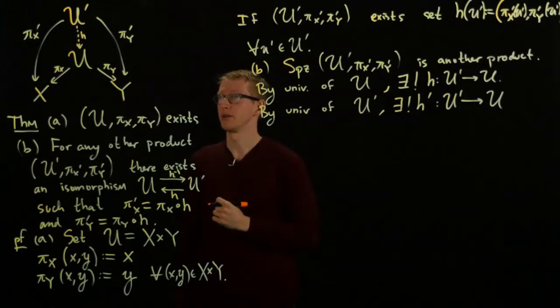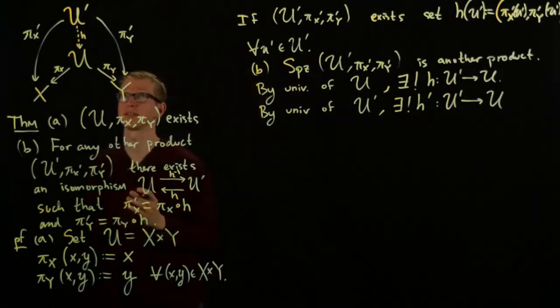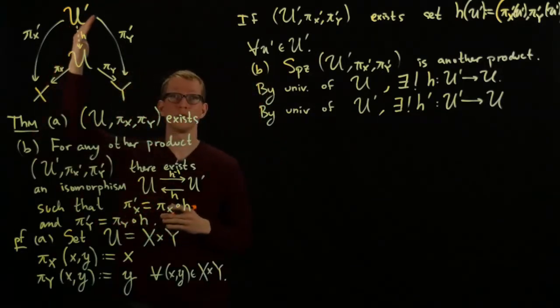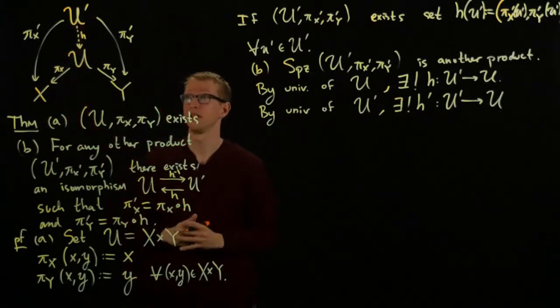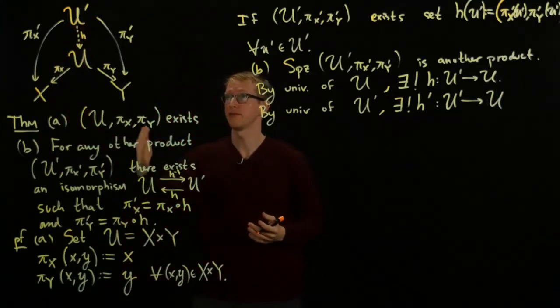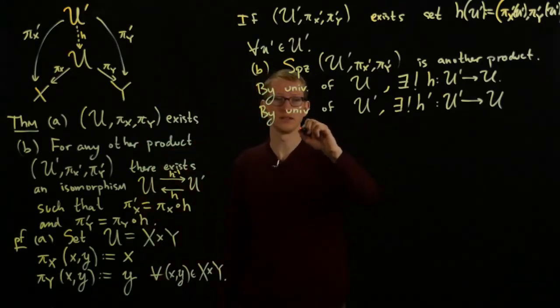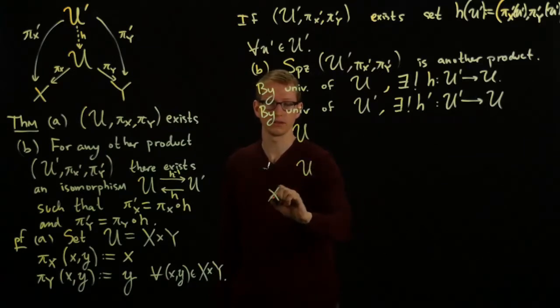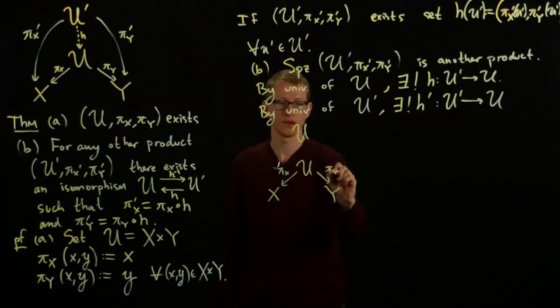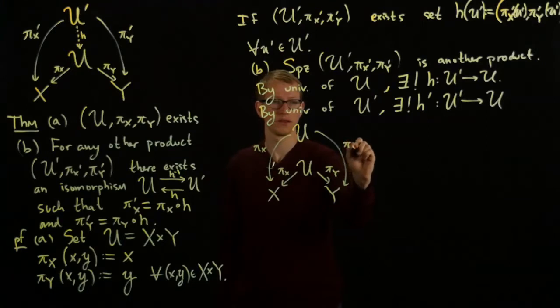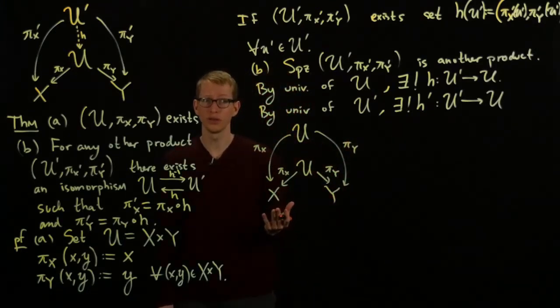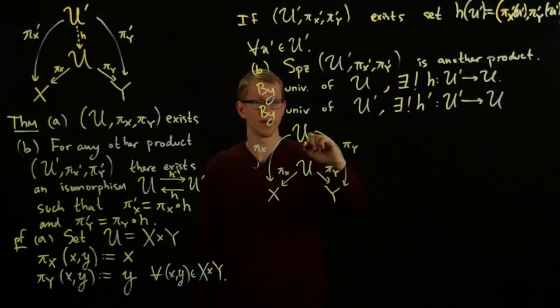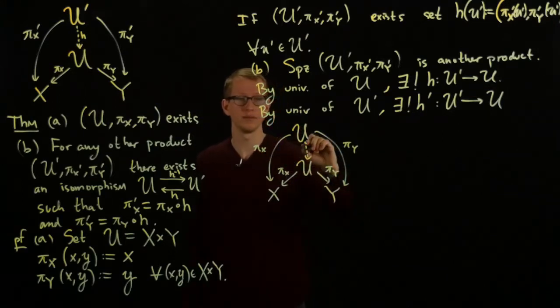Well, if we look at this diagram, and we merely replace U prime with U instead, so we just have U and we have, so let me actually write this so that it's easy to see, so here U, U, X, and Y, and then I have exactly these same projections. Well, by universality of U, there exists a unique map from here to here that makes this diagram commute.